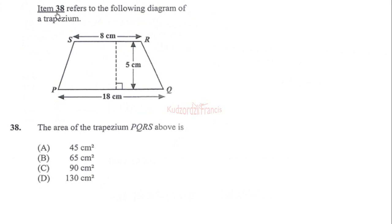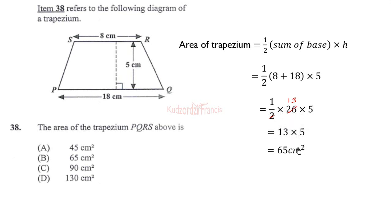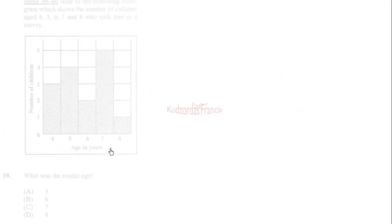Problem 38: find the area of trapezium BQRS. The area of a trapezium is sum of the bases times the perpendicular height, divided by 2. These are the bases, and the perpendicular height is 5. We substitute: (8 plus 18) times 5, all over 2. 8 plus 18 is 26. Half of 26 is 13. 13 times 5 equals 65 square centimeters. The correct option is B.